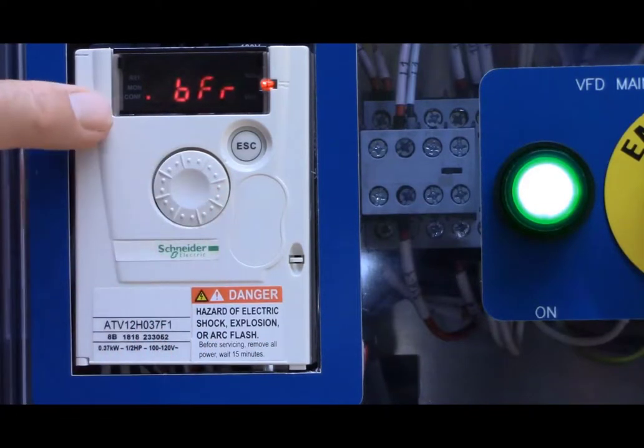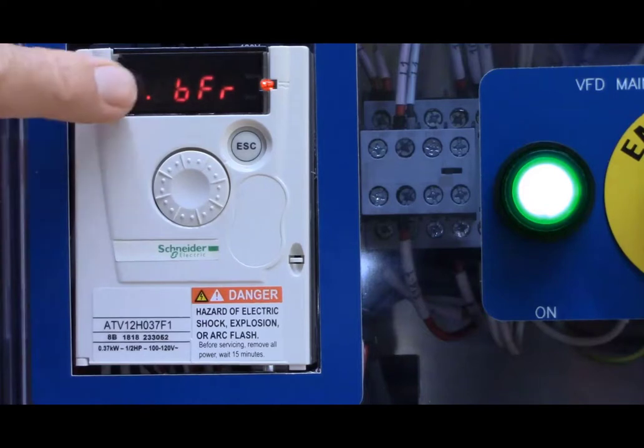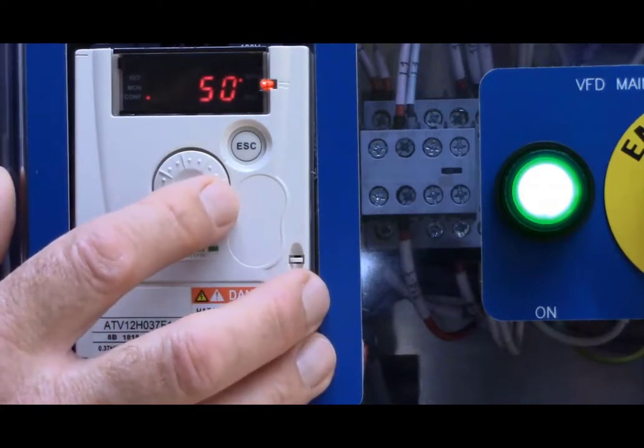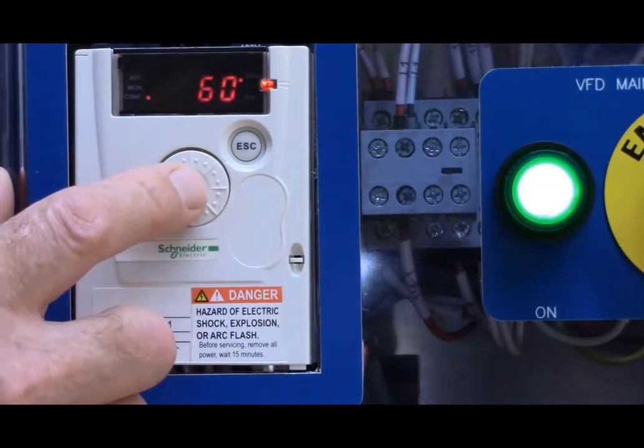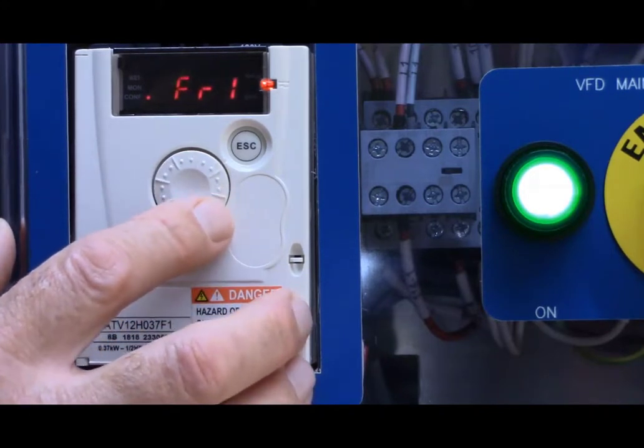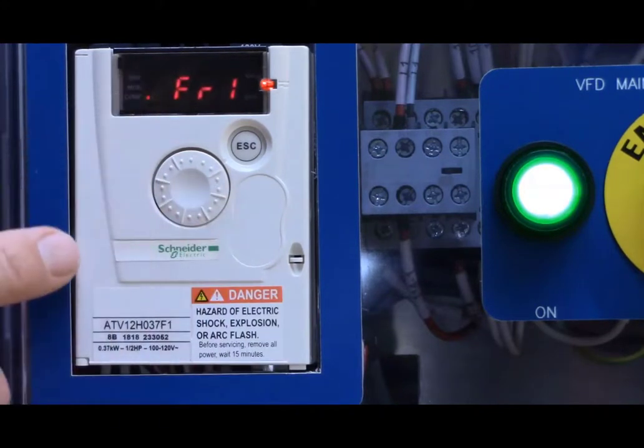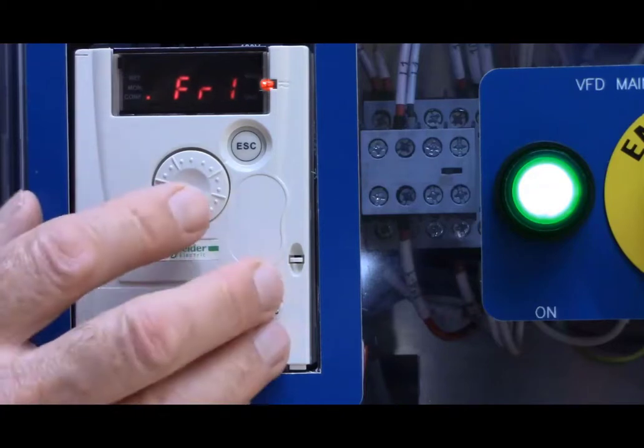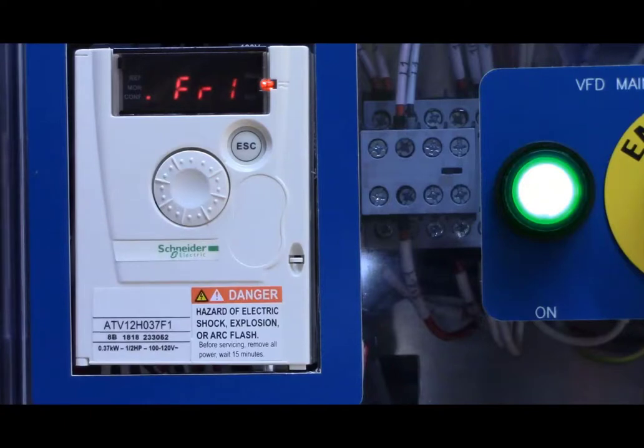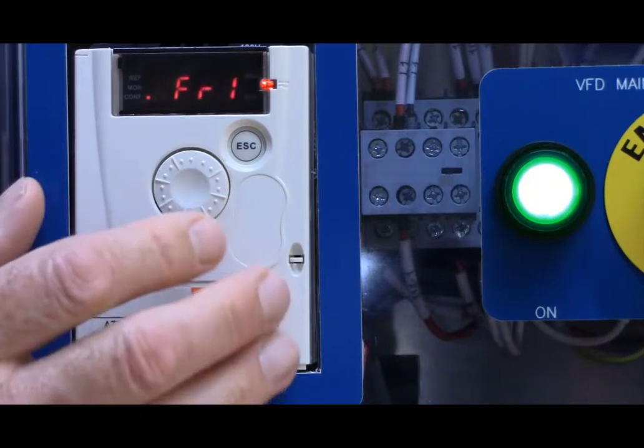So, basically, what I did was I pushed the center of the button, and I scrolled to the configuration menu. I'm going to push enter, and the first parameter comes up. It's called base frequency, and it's either going to be 50 hertz or 60 hertz. 50 hertz for IEC and 60 for NEMA. I'm going to set it to 60.